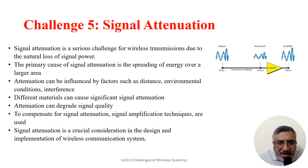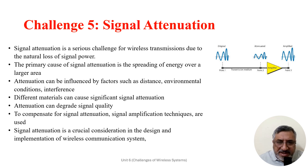Signal attenuation occurs in various communication systems, such as wired networks, wireless transmission, and optical fibers, due to the natural loss of signal power. The primary cause of signal attenuation is the spreading of energy over a large area as it travels, resulting in a decrease in signal power and strength.